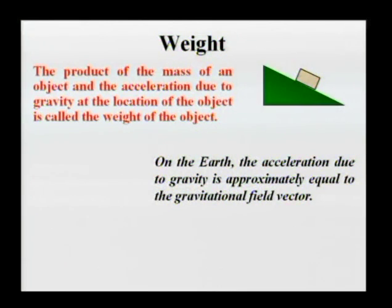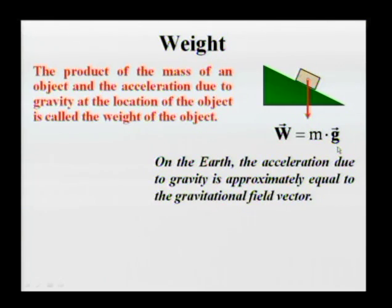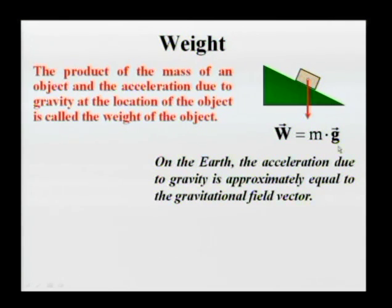On Earth — because we spin relatively slowly — it happens that acceleration due to gravity is equal to the gravitational field vector we discussed before. Because of that, we will use the same symbol for the gravitational field vector and for acceleration due to gravity. If you look at the cover of the book where various constants are listed, this g refers to acceleration due to gravity rather than strength of the gravitational field. In the book, you have only the magnitude of this vector listed, so it is a regular g, not a bold g, and without an arrow.